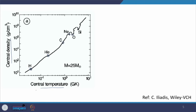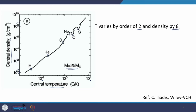These circles represent the different burning stages at different temperatures. Notice that temperature is changing by only about 2 orders of magnitude — from 10^-1 to 10^1 — whereas density varies by 8 orders of magnitude. These numbers are quite important. S and R processes are not shown here because they are mainly induced by neutrons, whereas the burning stages on this diagram depend on charged-particle-induced non-resonant and resonant reactions. A star of 25 solar masses is chosen because researchers have established it as representative for studying all these burning stages.